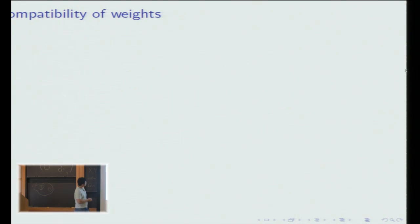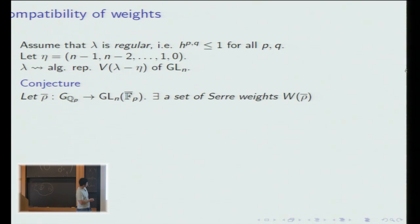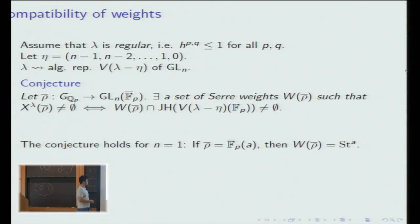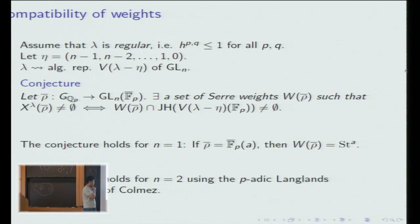This conjecture is known when n equals 1, as mentioned in a previous slide. If ρ̄ is F_p twisted by a, then we can just take the set of weights to be the a-th power of the standard representation. More interestingly, it also holds when n equals 2, and this really uses the full strength of the p-adic Langlands correspondence of Colmez for GL_2(Q_p).